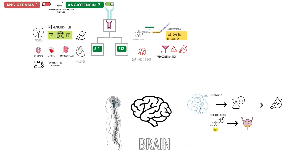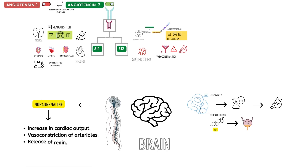It also stimulates the sympathetic nervous system to increase the release of noradrenaline. This hormone is typically associated with the fight-or-flight response in stressful situations and has a variety of actions relevant to the RAS, like increase in cardiac output, vasoconstriction of arterioles, and release of renin, which all ultimately cause increased blood pressure.